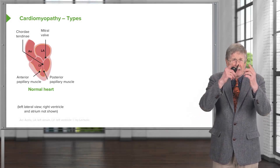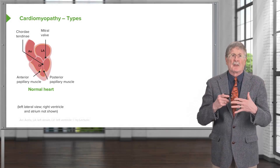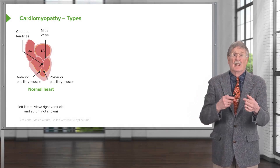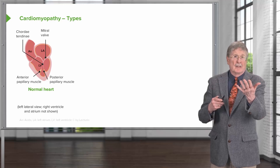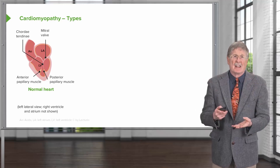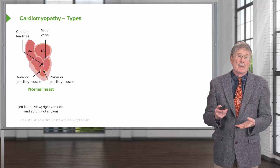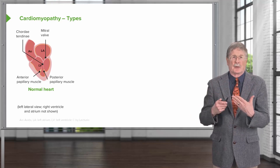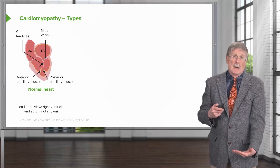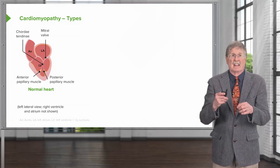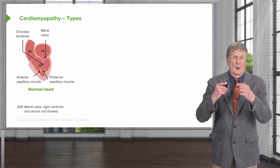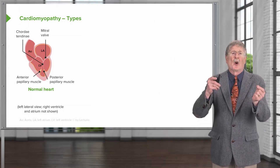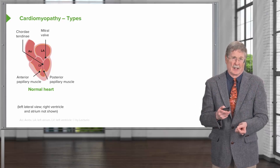We're going to use a schematic to help understand the various forms of cardiomyopathy. Looking at the normal heart, we've emphasized mainly the left ventricle, left atrium, and the aorta, though some images will show the right ventricle as well. The normal heart has normal valve closure, normal-sized left atrium and left ventricle cavity, and normal thickness of the myocardium in the left ventricle.